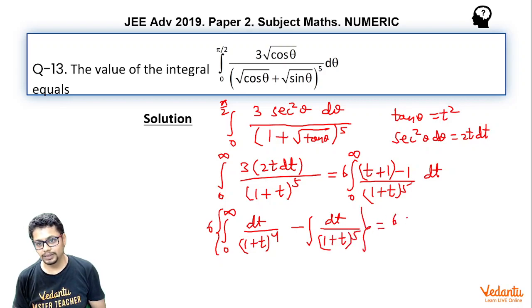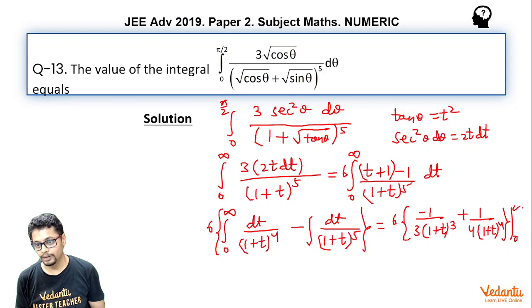this becomes 6 times you may say minus 1 by 3 1 plus t whole to the power 3 minus minus 1 by 4 1 plus t whole to the power 4 with the limits 0 infinity.